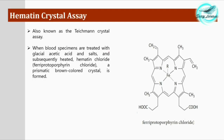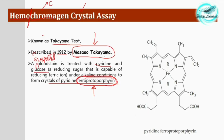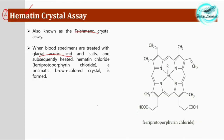The next test is the hematin crystal assay, also called the Teichmann test. We get hematin crystals of heme. When suspected blood specimens are treated, you have to distinguish between the hemochromogen and hematin crystal assays. The hemochromogen crystal test is carried out in alkaline conditions, whereas the hematin crystal assay is carried out in acidic conditions.